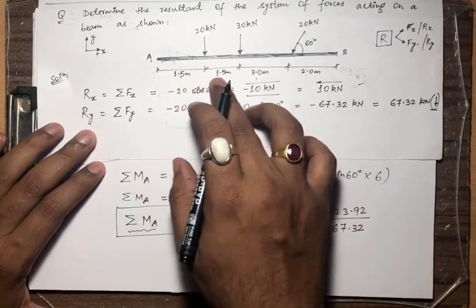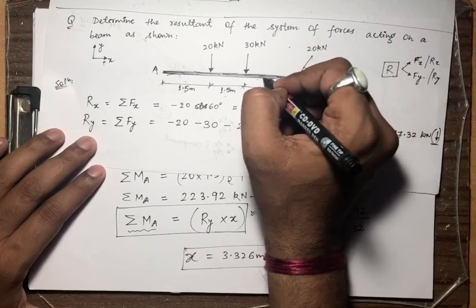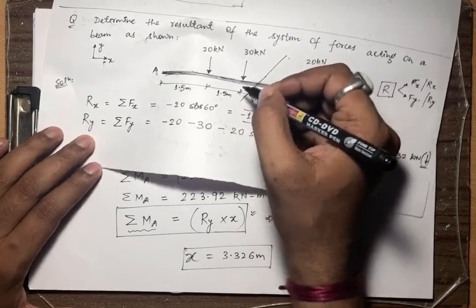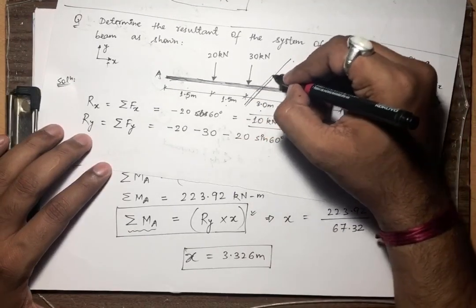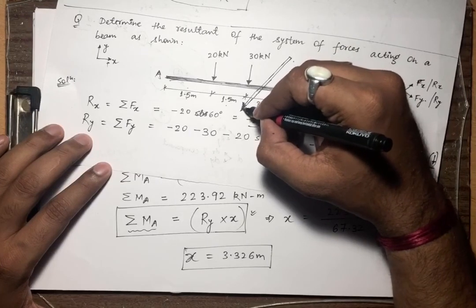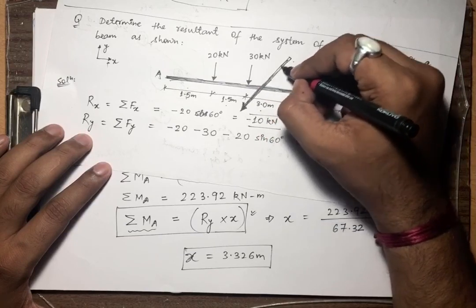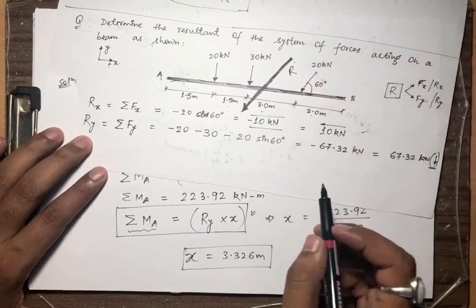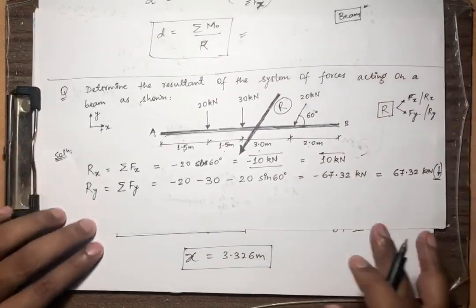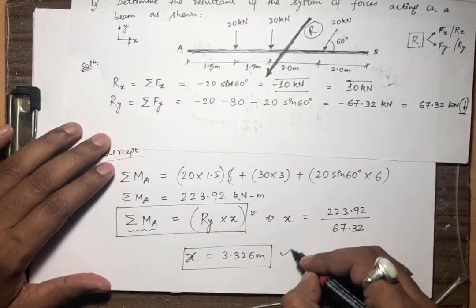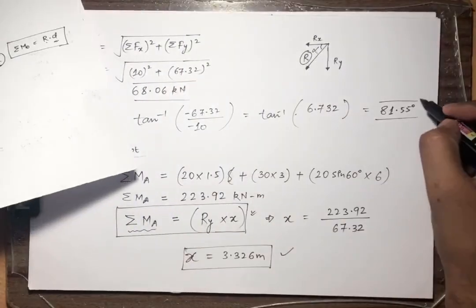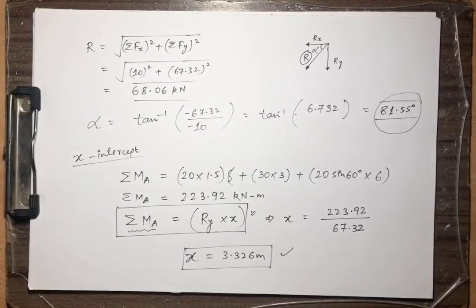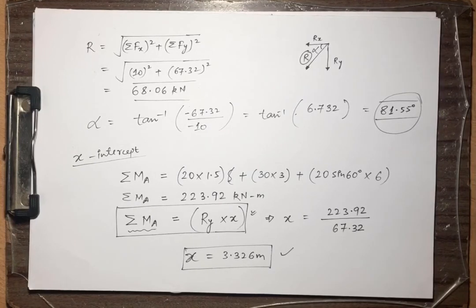So the resultant is acting at 3.326 m from point A, somewhere along the beam. We can replace all the forces with this resultant R of 68.06 kN at angle 81.55 degrees, applied at that x-intercept location. I hope this lecture is clear. If you have any doubts, just ask. I will solve more problems in the coming lectures. Thank you very much.